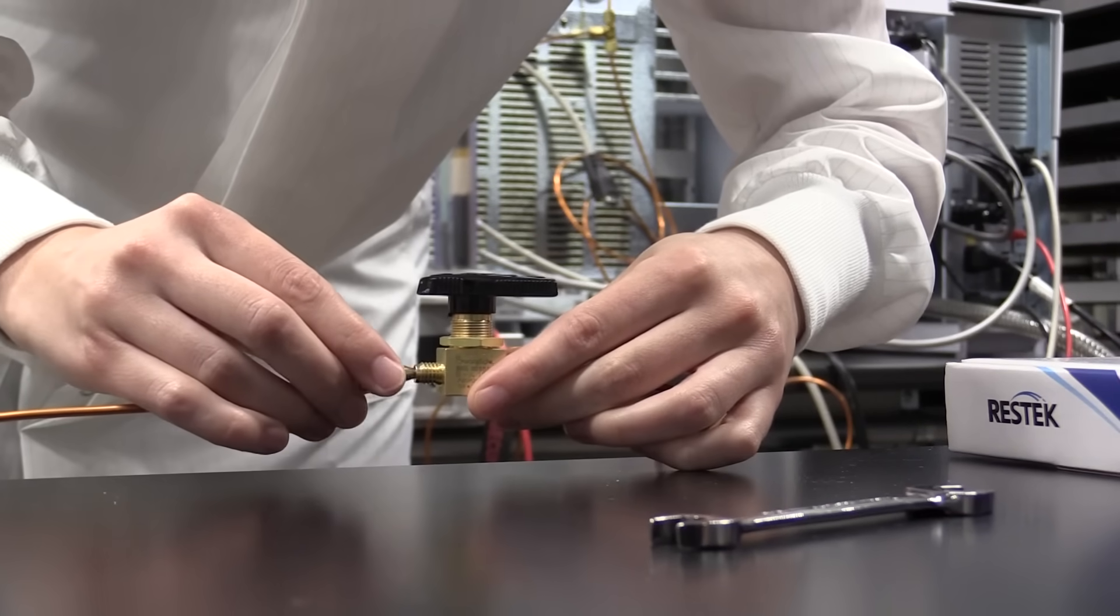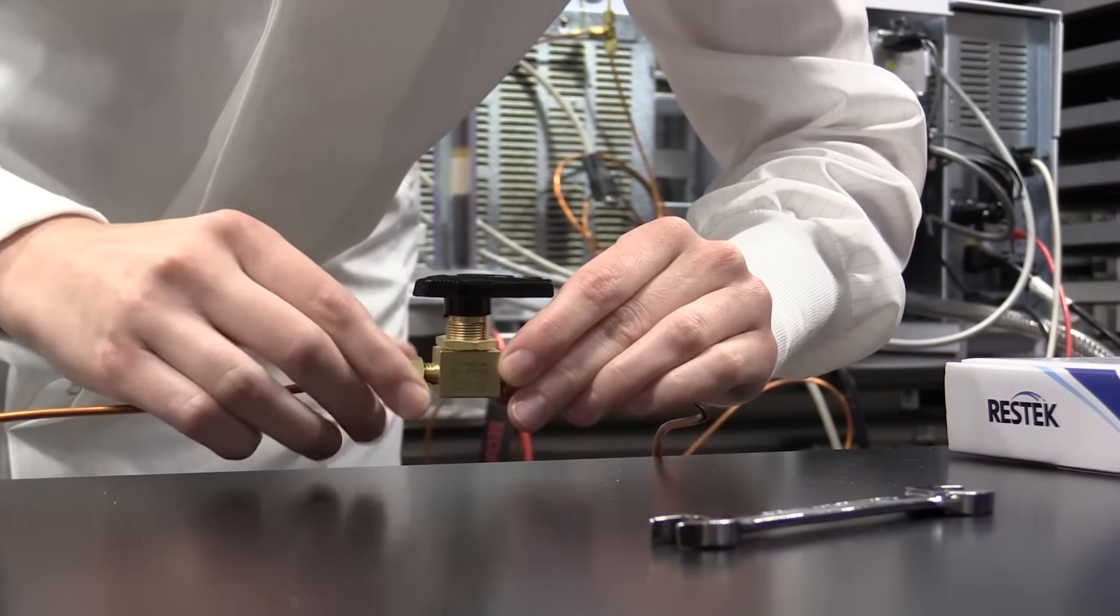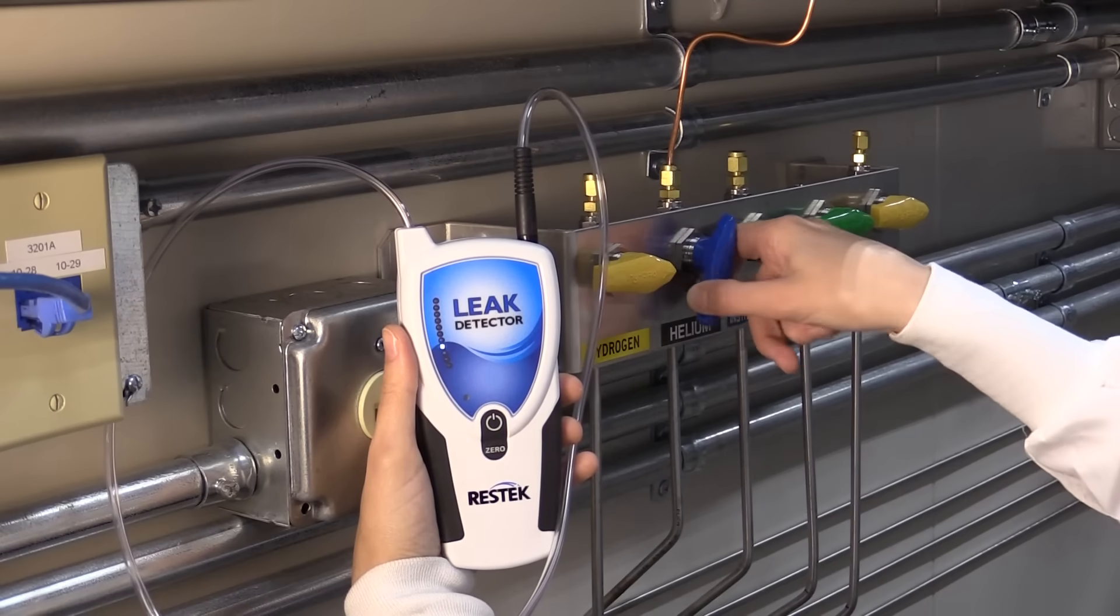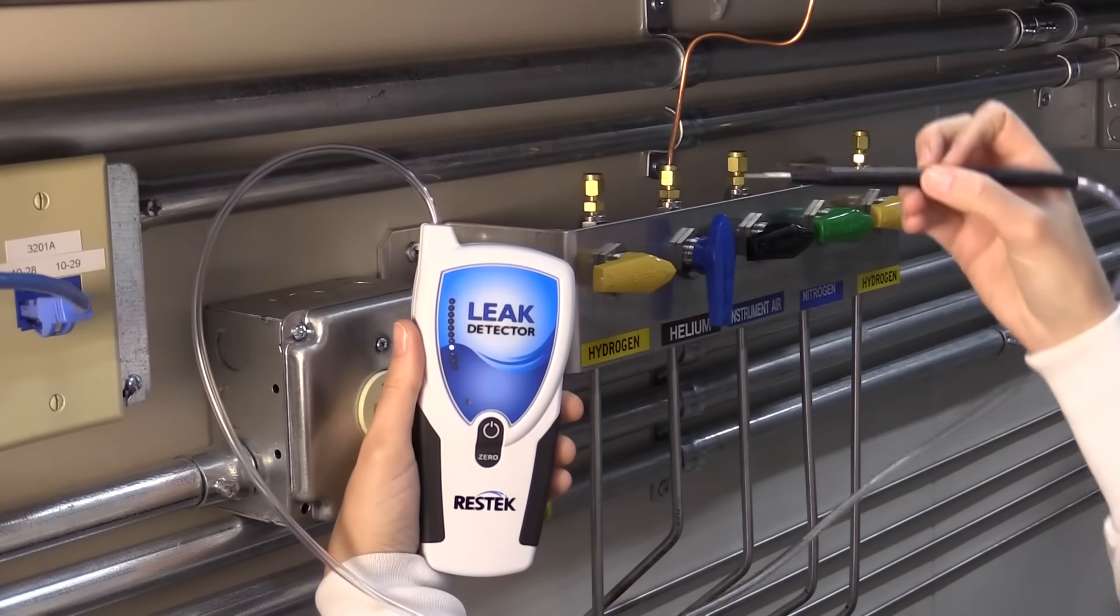As moving parts and valves age and wear, they can become another common location for leaks. Replacement may be necessary. After installing new gas lines, always remember to pressurize the system and check for leaks.